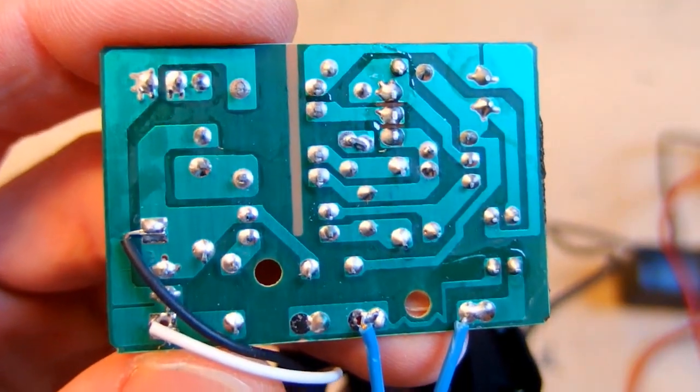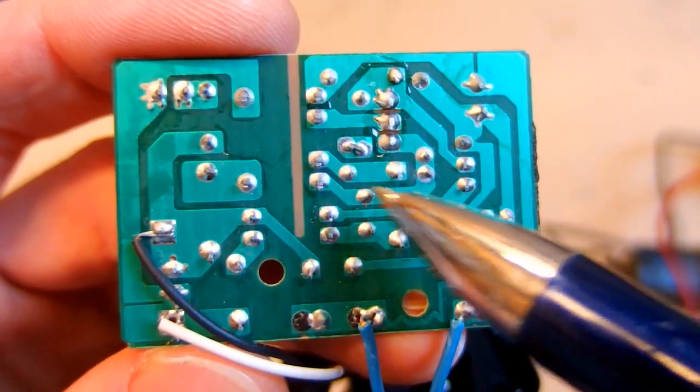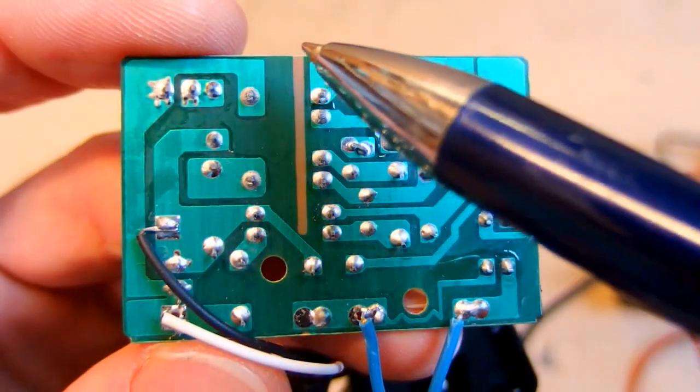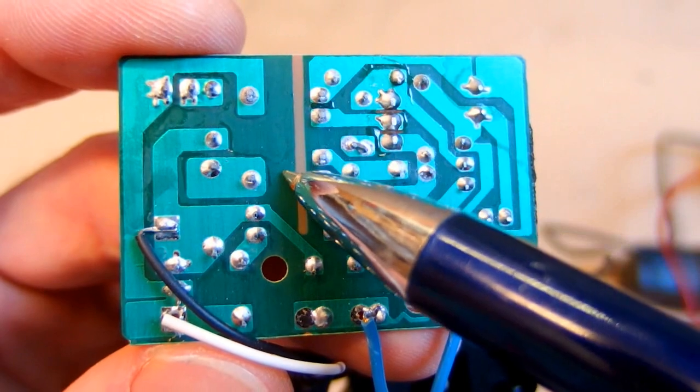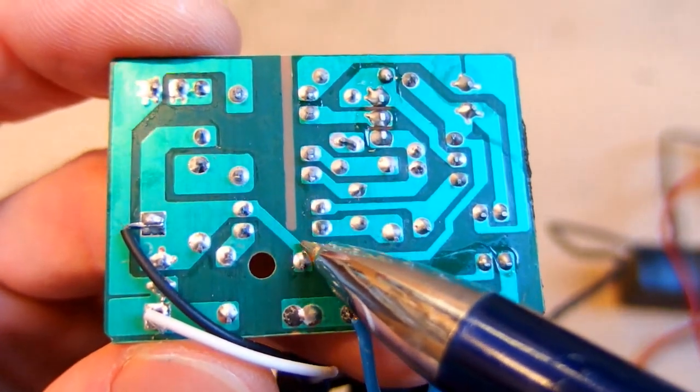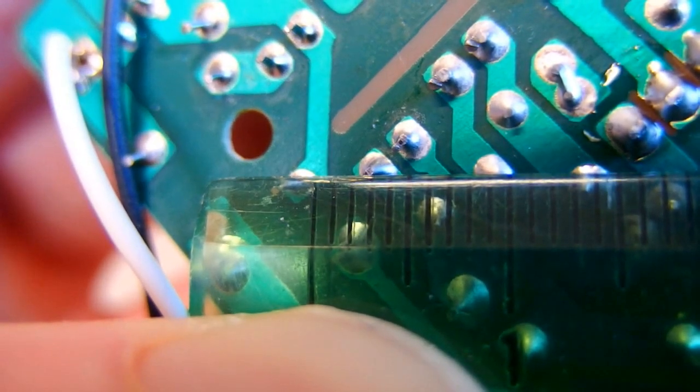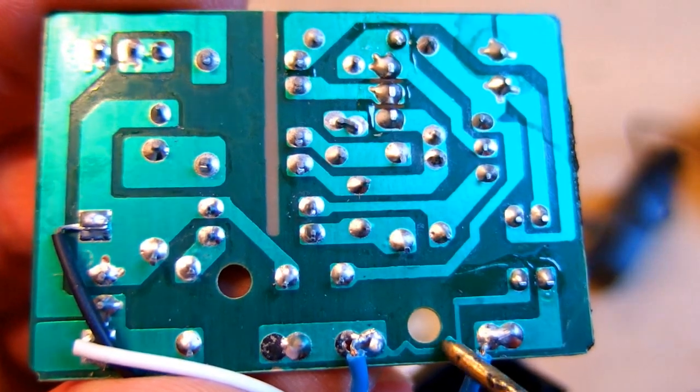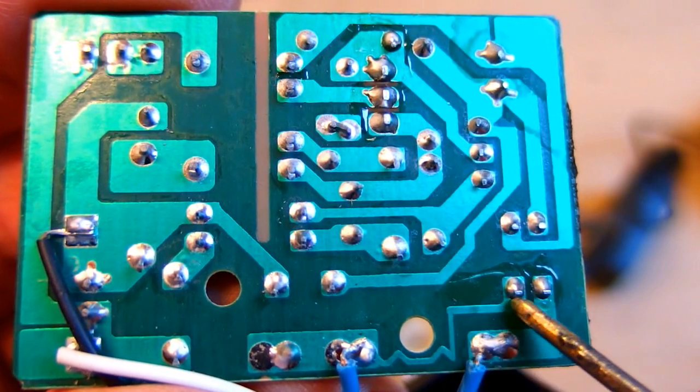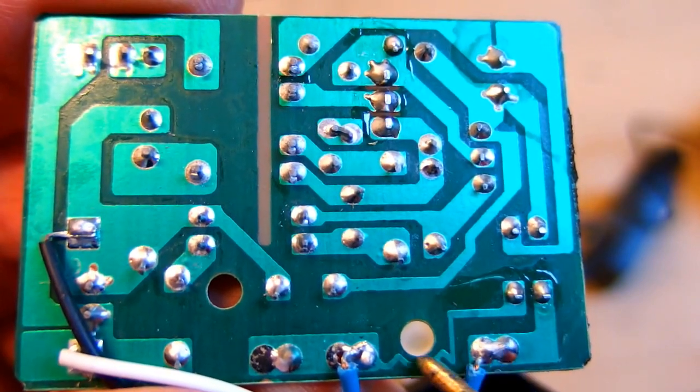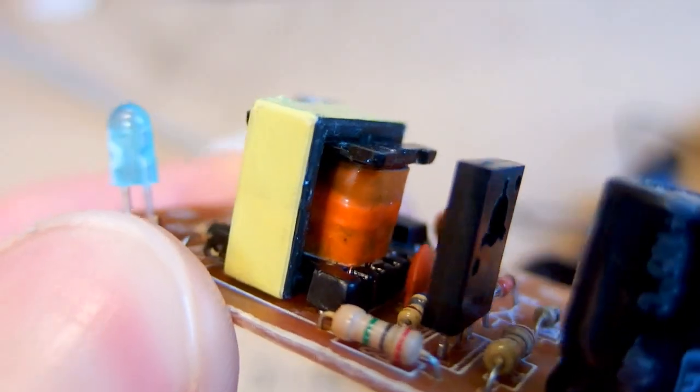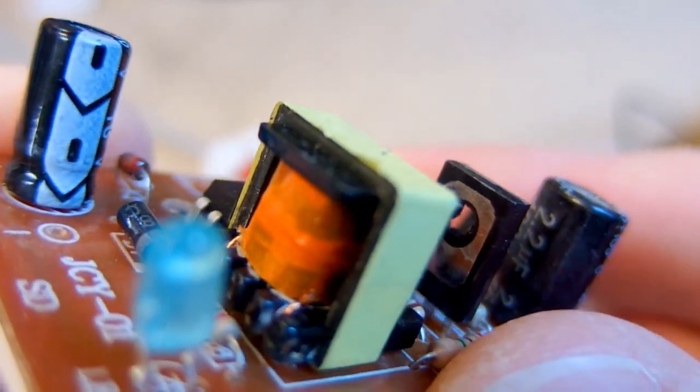So here you can see the isolation distance between the primary and the secondary side. It's quite a nice distance here, but it's kind of defeated by this connection, which is too close to this one. So it's about one and a half millimeters. This thin track is the only fuse in it. That's quite a dodgy fuse. And the transformer looks quite questionable as well.